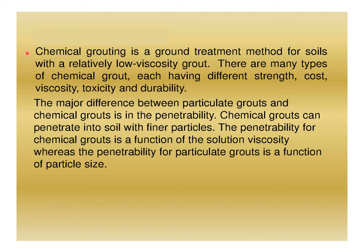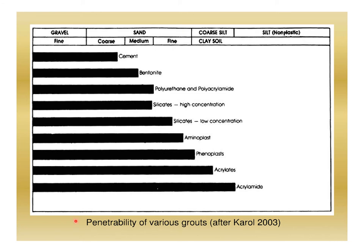Chemical grouting is a ground treatment method for soils using relatively low viscosity grout. There are many types of chemical grout, each having different strength, cost, viscosity, toxicity, and durability. The major difference between particulate grouts and chemical grouts is in penetrability — chemical grouts can penetrate into soil with finer particles. Penetrability for chemical grout is a function of solution viscosity, whereas penetrability for particulate grout is a function of particle size.